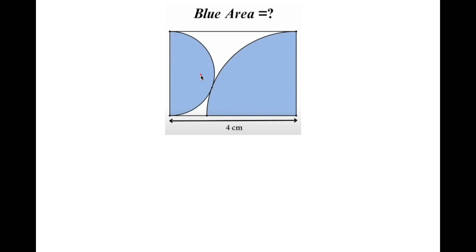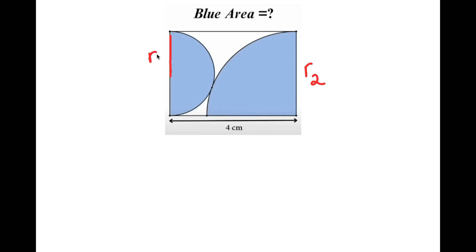In this video, I'm going to try to find the blue area of this shape right here. To start, what I'm going to do is label this entire side as R sub 2, and I'm going to label half of this side as R sub 1.